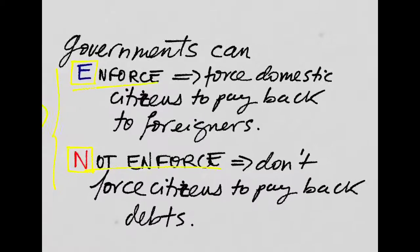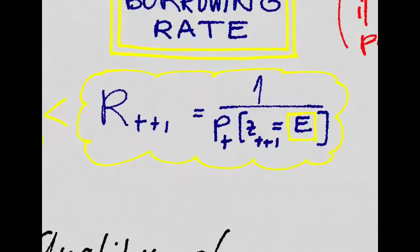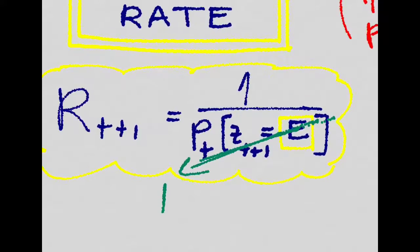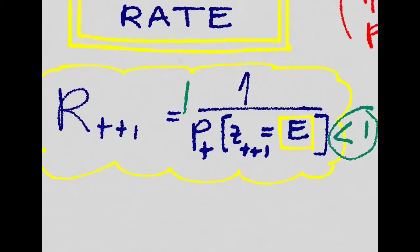Obviously, the higher the probability of enforcement, the lower the interest rate we will have to pay for borrowing money from abroad, because we will be seen as less risky. And this is why the borrowing rate takes this form. Basically, if the probability that we will pay back the debts was one, then we will just be borrowing at the same rate as the lending rate. But if there is a slightest chance that this probability is less than one, then we would have to borrow at a higher interest rate.